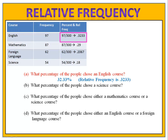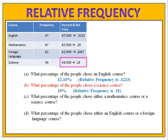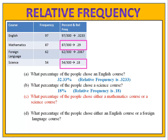What percentage of the people chose a science course? That's 0.18, or 18%. What percentage chose a mathematics course or a science course? Now we're concerned with two categories — mathematics and science. 29% and 18% is 47%, so the relative frequency that someone chose a mathematics or a science course is 0.47.